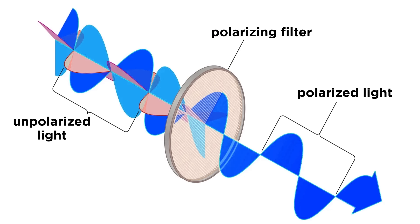One way of distinguishing between a pair of enantiomers has to do with the direction that they rotate plane polarized light. When a beam of ordinary light passes through something called a polarizer, only the light oscillating in a particular plane will pass through, and this is said to be plane polarized, as light oscillating along any other plane is blocked out.